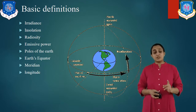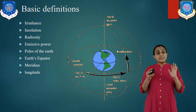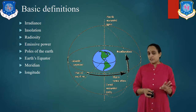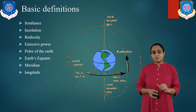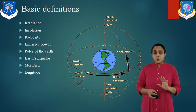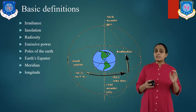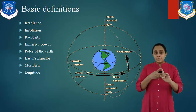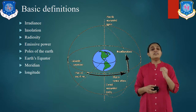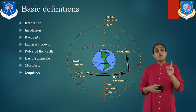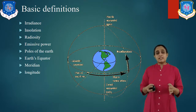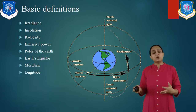You have to write each and every definition in your notebook because they are very important. Now let us move towards our fourth definition: emissive power. The rate at which radiant energy leaves the surface per unit area by emission only. There is a difference — radiosity means the rate of radiant energy leaving the surface with emission, reflection, and transmission, whereas emissive power is the rate of radiant energy leaving the surface only by emission.